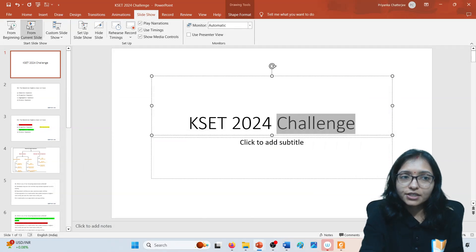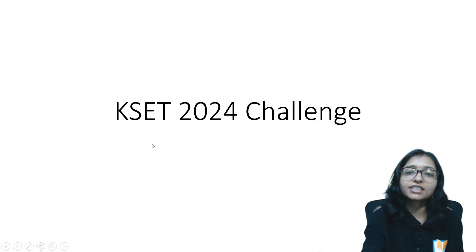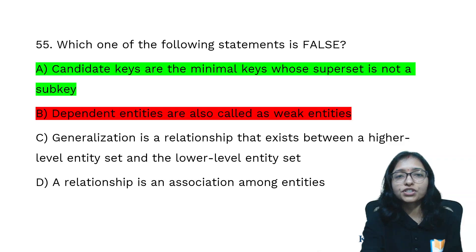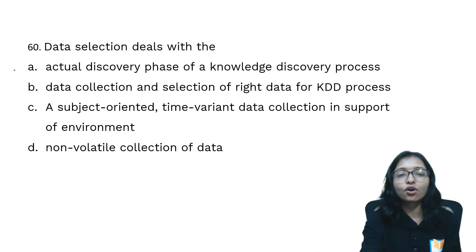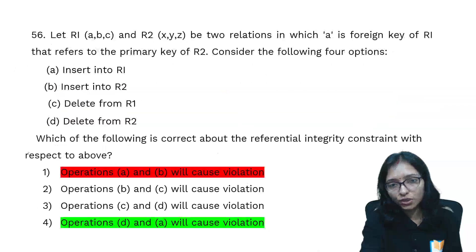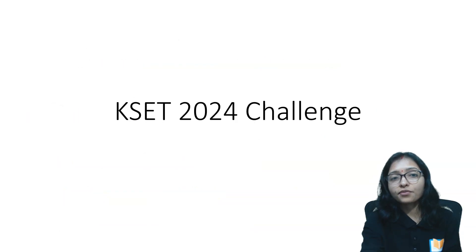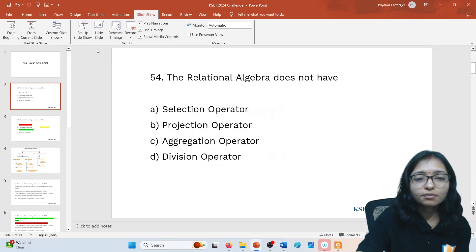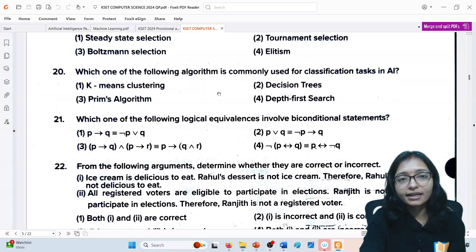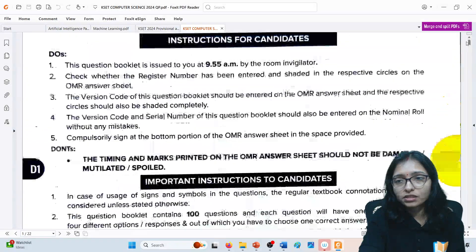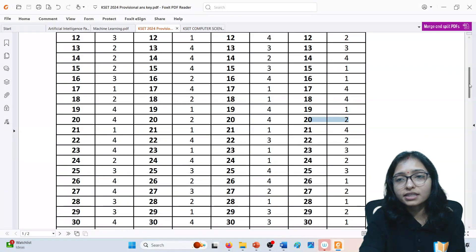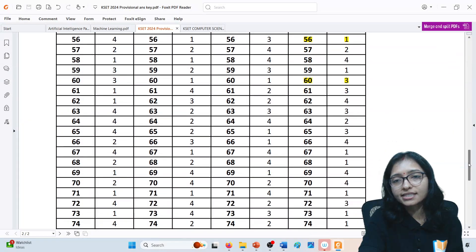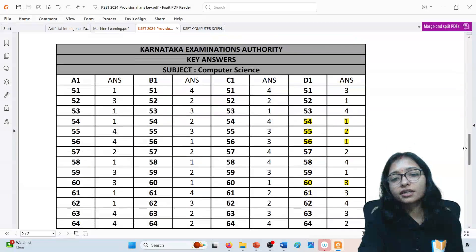Hello everyone, welcome to Unify Study. So CASIT 2024 — you can challenge these questions. I am 100% sure the official answer key is wrong for these questions. I am giving that guarantee. Here, the first question is question number 54 as per the D1 set. You can verify it — in my hand this is the D1 set. Questions 54, 55, 56, and 60 have wrong answer keys.